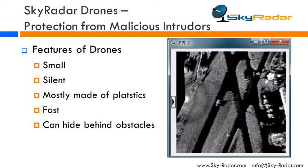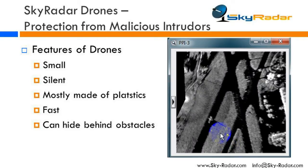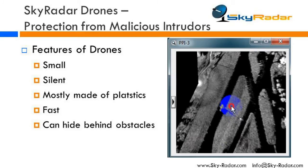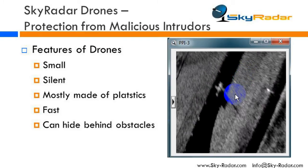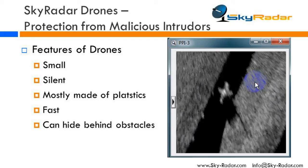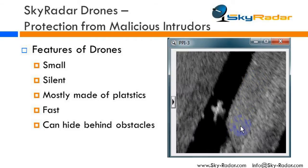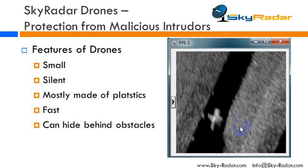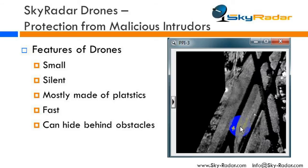In order to control, to detect, to find drones, we have to think about their features. Drones are small, they are silent, they are mostly made of plastics. They are fast and they can hide behind obstacles.